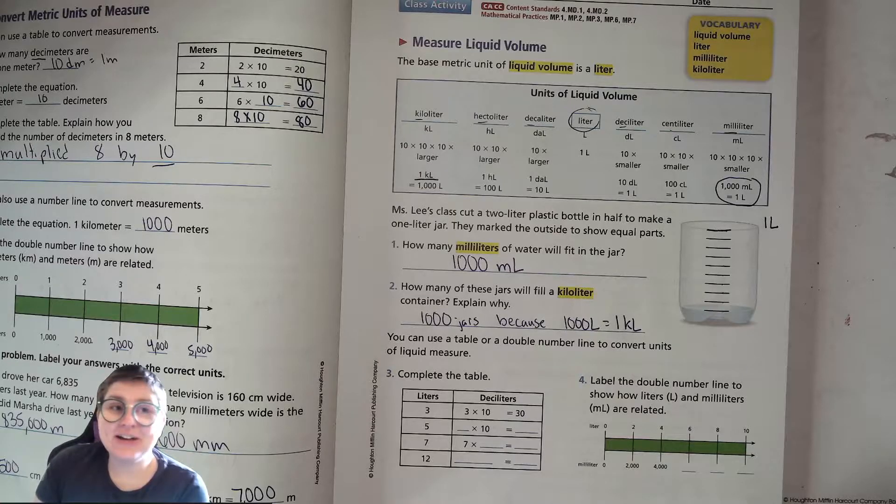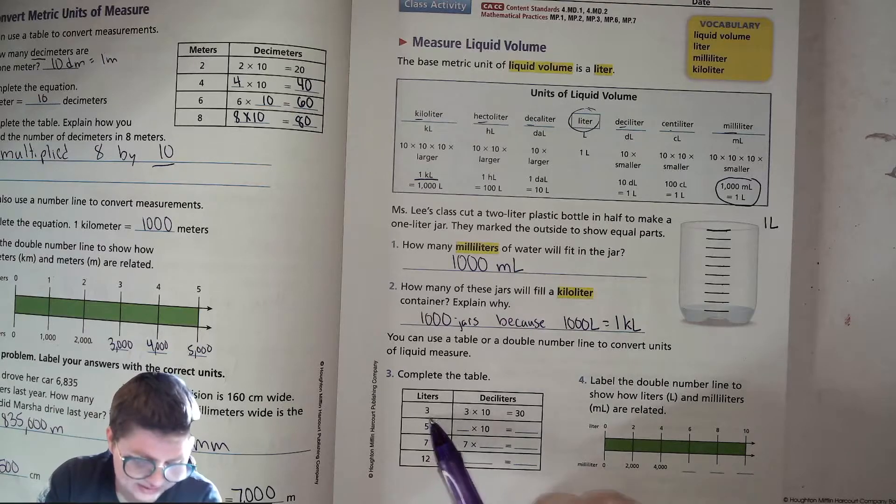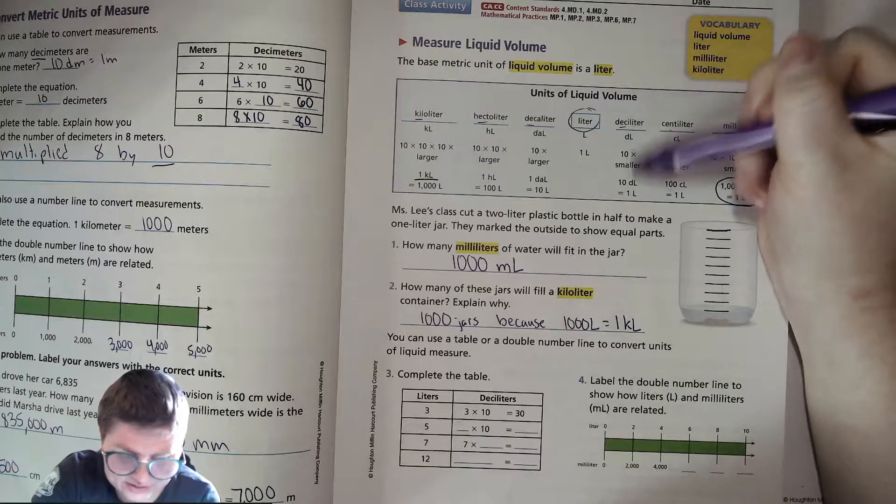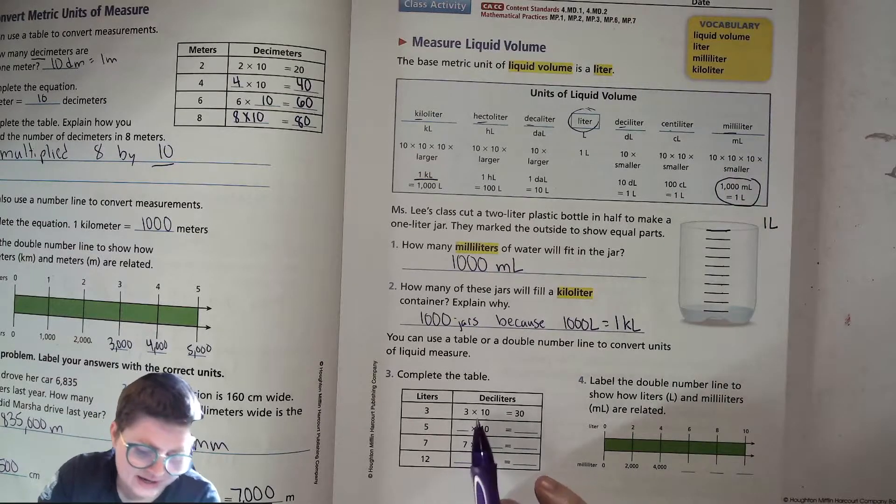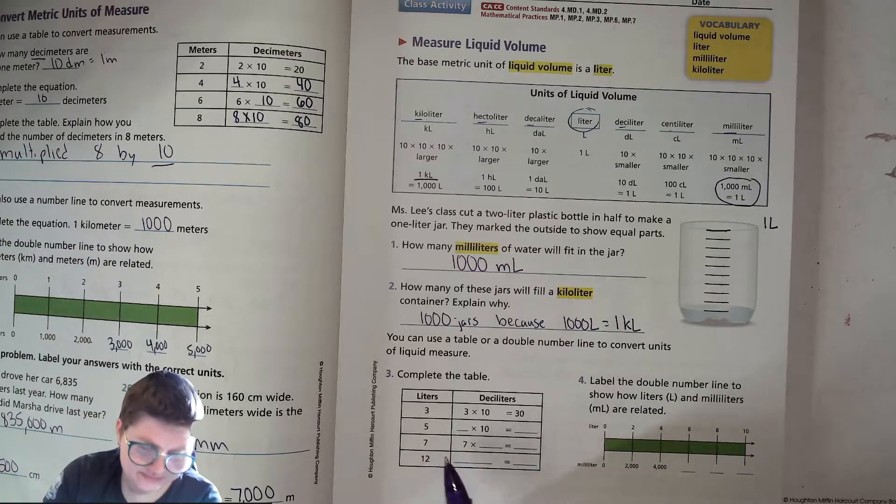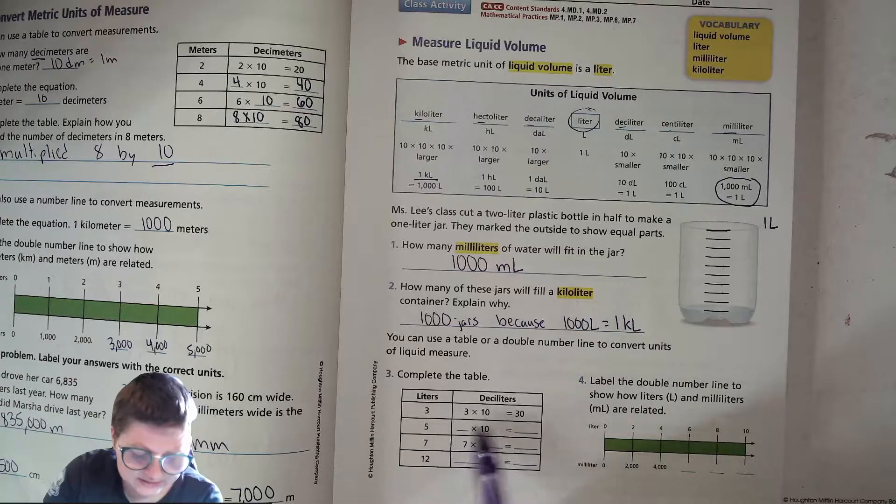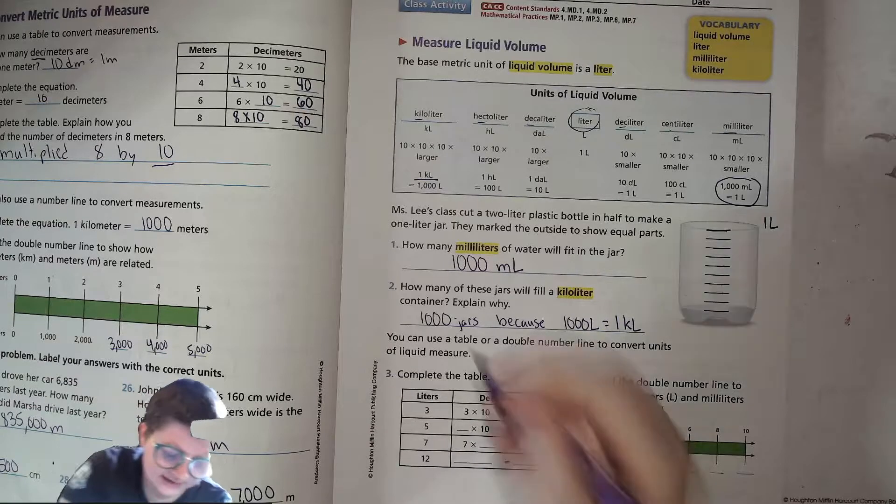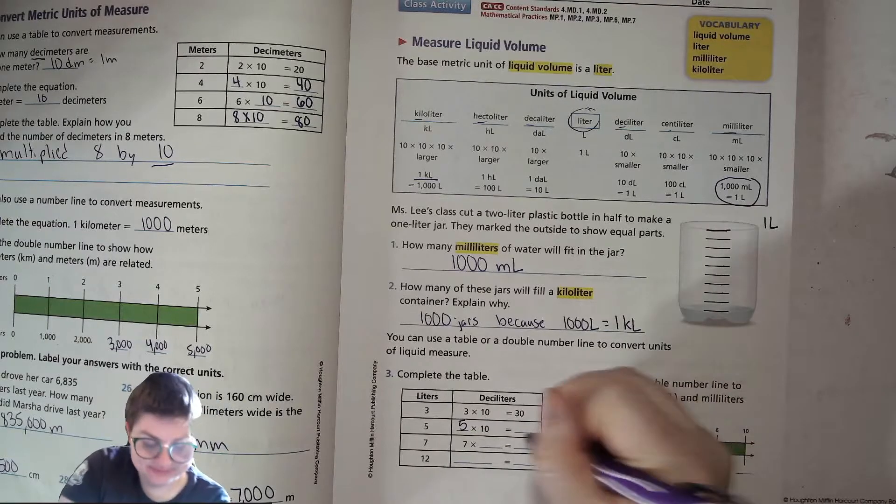1000 jars because 1000 liters equals one kiloliter. It's just so nice that it's all based on 10 and 100 and 1000. Complete the table. So deciliters are this one. It's a tenth of a thing, right? So in three liters, you multiply it by 10 to find the number of deciliters. So three liters is 30 deciliters. Five, you're going to multiply that five by 10. And what is five times 10? It's 50.